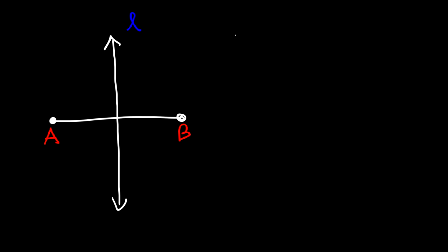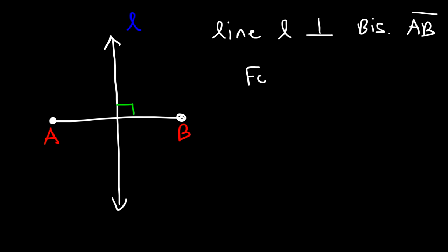Now let's move on to perpendicular bisectors. Consider segment AB, and we're going to draw a line that passes through it — let's call this line L. Line L is the perpendicular bisector of segment AB. A perpendicular bisector is basically the hybrid of a median and an altitude combined. Like an altitude, it forms right angles. And like a median, it splits the segment into two congruent parts. Let's call this point M.